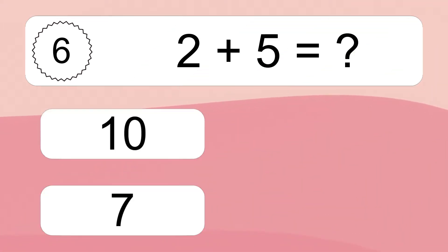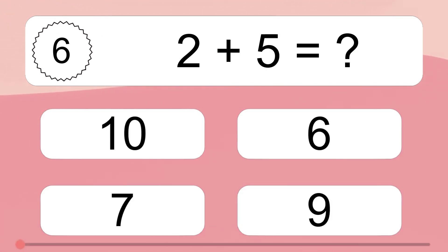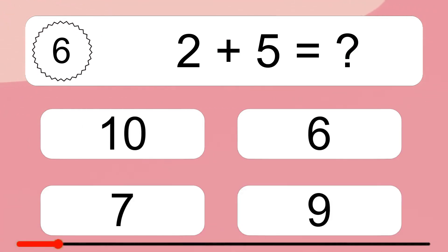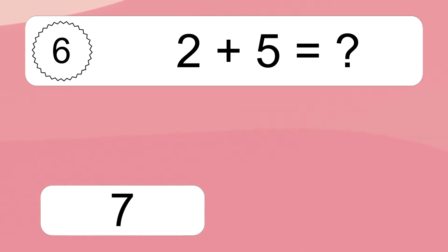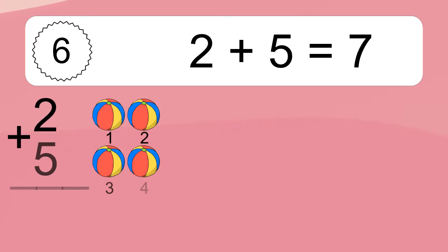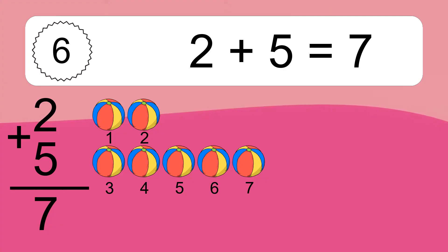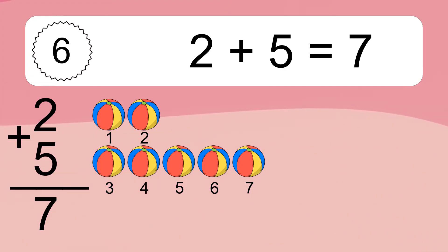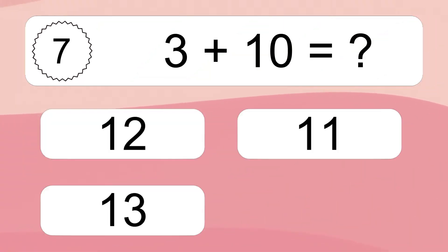Two plus five equals what? Two plus five equals seven. Let's count it: one, two, three, four, five, six, seven.